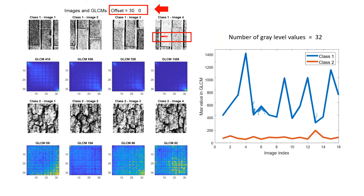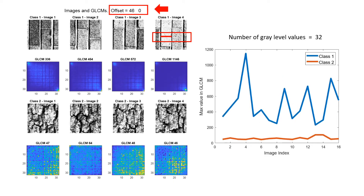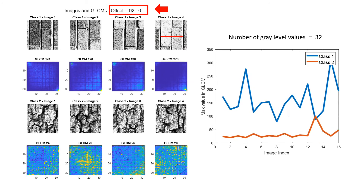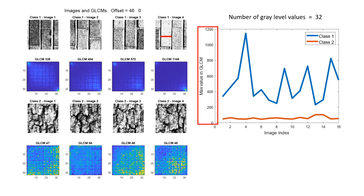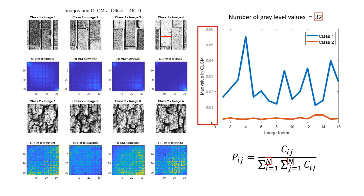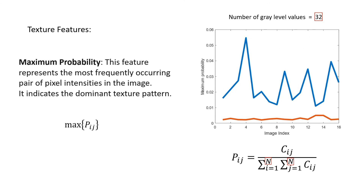Let's change the offset value from 15-0 to 30-0. As we can see we can obtain better results. Let's change it to 46-0. Now let's try 92-0. By now we have realized that a good offset for this particular problem is 46-0, and working with the total number of gray level values of 32 are actually both good options. Dividing the co-occurrence matrix by the total number of occurrences, we in fact change the values to probabilities, and the maximum probability will become a texture feature that we may be able to use to distinguish between different classes.